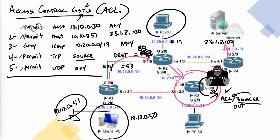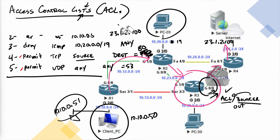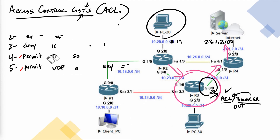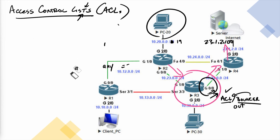Some slightly good news: if we have an access control list with no entries at all applied to an interface, the router says there's an ACL applied but there are no entries in it, so it just ignores it and lets all traffic through. An access control list with no entries is not going to block any type of traffic.